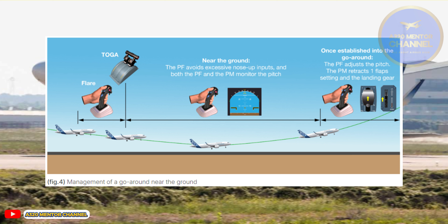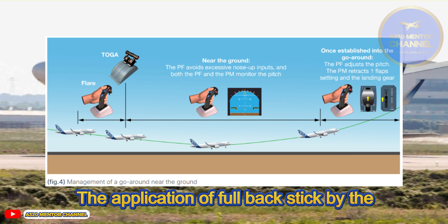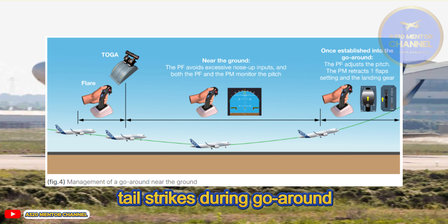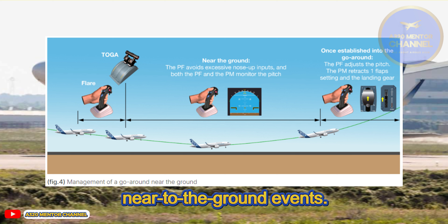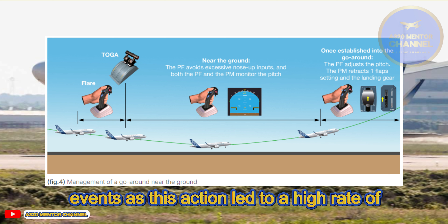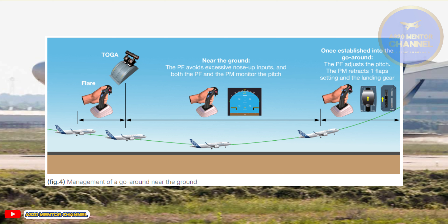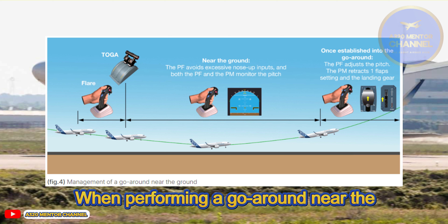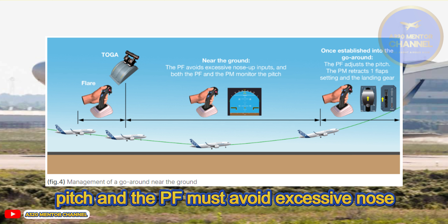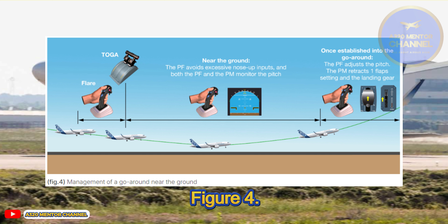Avoid high rotation rate. The application of full back stick was reported in many tail strikes during go-around near the ground events and was a common contributor, as this led to a high rate of rotation. When performing a go-around near the ground, the PF must avoid excessive nose-up input.